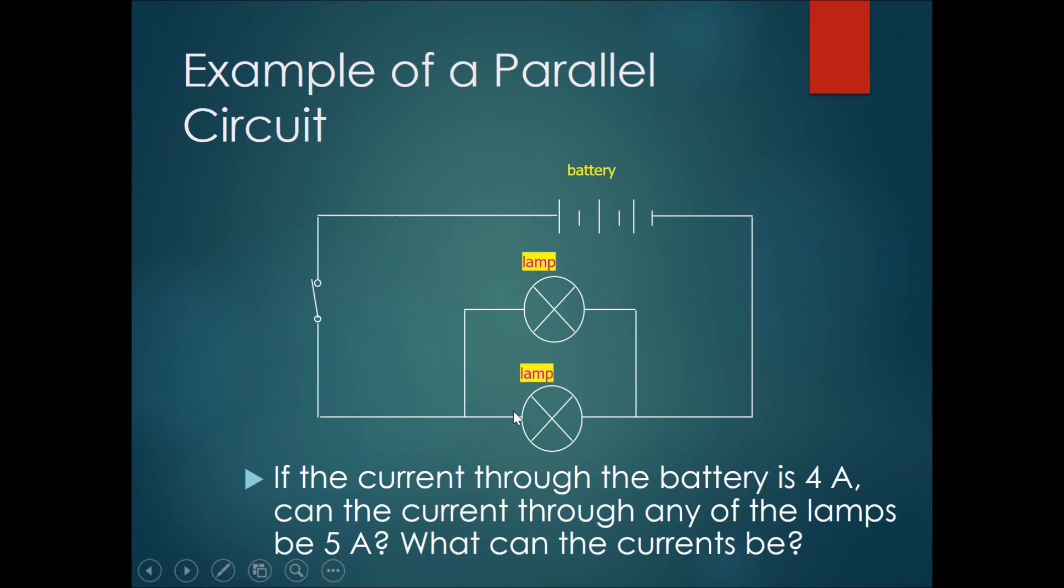The basic question will be: if the current through the battery is four amperes, can the current through any of the lamps be five amperes? The answer to this would be no. The maximum current that can ever flow through either one of these branches would be four amperes, which is the maximum coming from the battery.